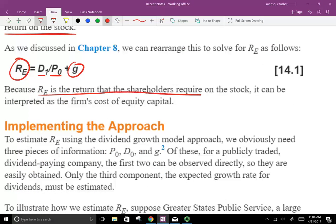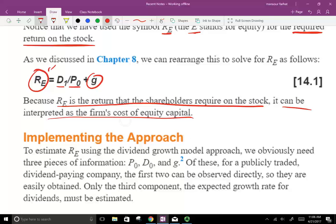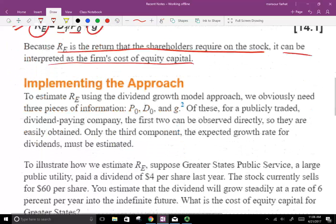Because R_E is the return that shareholders require on the stock and can be interpreted as the firm's cost of equity. If this is how much the investors want to earn, let's assume 15%, if that's what they want to earn, it means that's the cost that the company will have to incur to raise the fund. So let's go ahead and implement this approach.